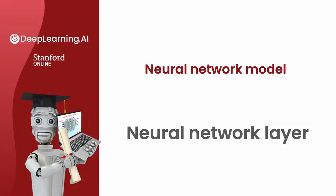The fundamental building block of most modern neural networks is a layer of neurons. In this video, you'll learn how to construct a layer of neurons, and once you have that down, you'll be able to take those building blocks and put them together to form a large neural network. Let's take a look at how a layer of neurons works.